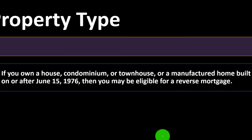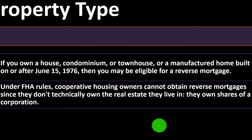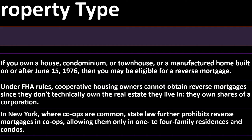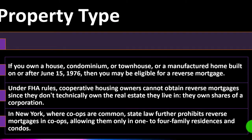What is required for a reverse mortgage? Property type: if you own a house, condominium, townhome, or a manufactured home built on or after June 15th, 1976, you may be eligible. Under FHA rules, cooperative housing owners cannot obtain reverse mortgages since they don't technically own the real estate — they own shares of a corporation. In New York, co-ops are common, and state law further prohibits reverse mortgages in co-ops, allowing them only in one-to-four family residences and condos.